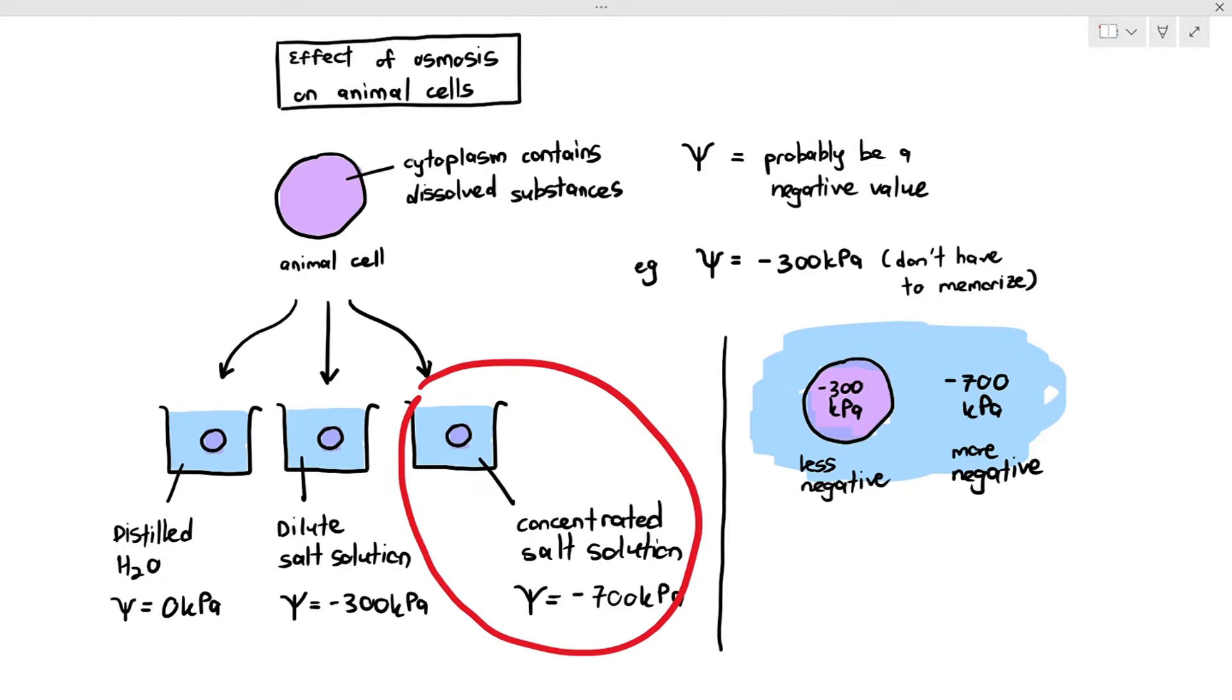Again, osmosis is net movement of water from a less negative water potential to a more negative water potential. In this case, water rushes out of the cell and if water rushes out of the cell, the cell loses the volume of its cytoplasm and the cell may shrink. Why is this dangerous? Because the cells are losing water. You know for a fact that we need water to survive. So if our cells are deprived of water, the cell will die.